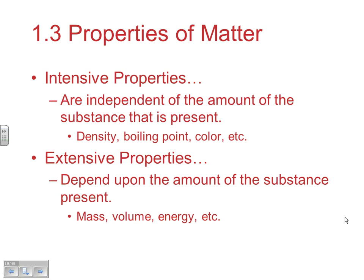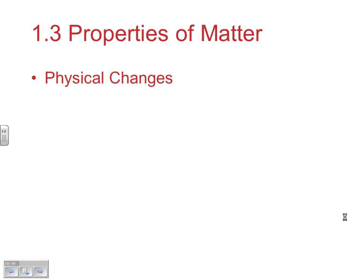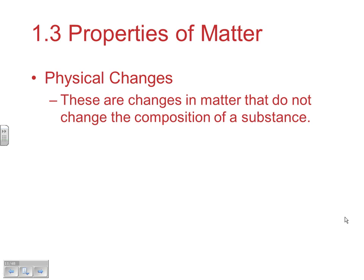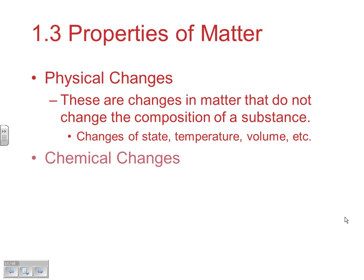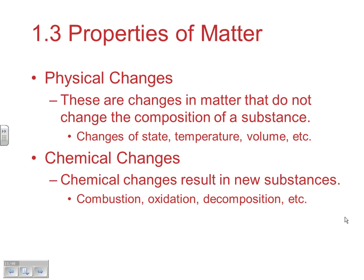A physical change is one in which matter doesn't change its composition — it's not becoming a new substance. Change of state, like boiling, is a physical change. Chemical changes result in a new substance — combustion, oxidation (rusting), and decomposition are examples. If you remember different types of chemical reactions from last year, those are examples of chemical changes.